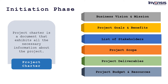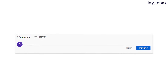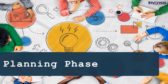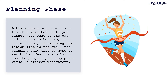Now that we have covered the initiation phase, let's move on to the planning phase. To understand the planning phase, consider the example of finishing a marathon — you cannot just wake up one day and run a marathon. So if reaching the finish line is the goal, the planning done to reach that feat is similar to how the project planning phase works. The deliverables and goals are documented along with requirements and objectives clearly defined for the teams. Proper plans for schedules and teams are created to reach the end goal before the assigned time frame.